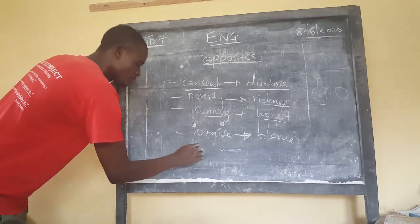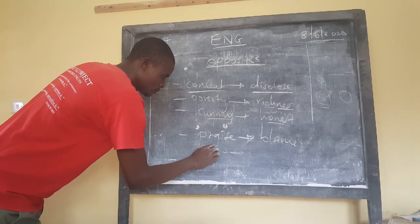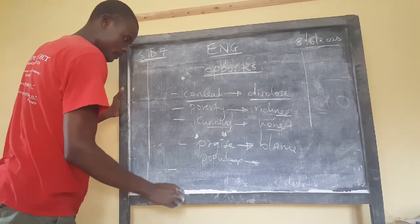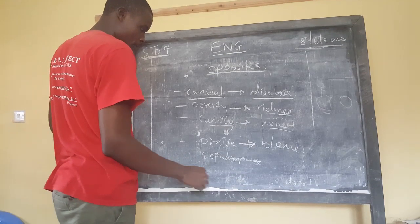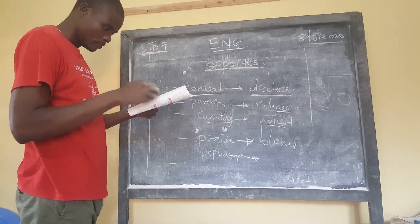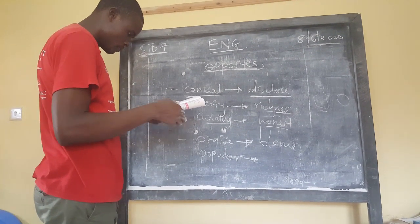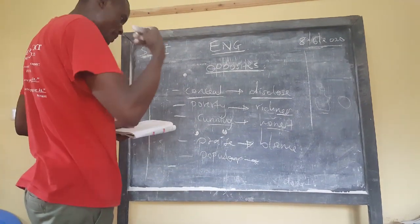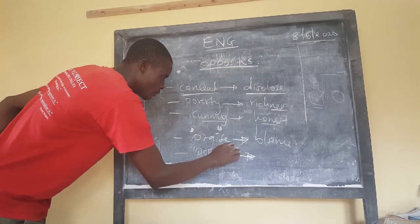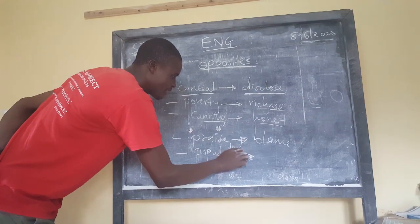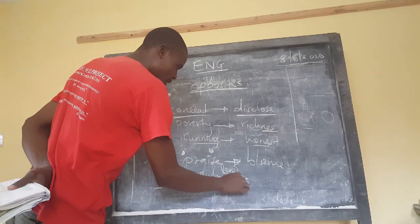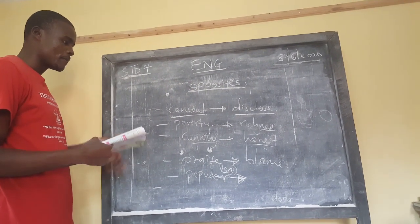I think this word is commonly misused: the word 'popular'. Someone who is popular is somebody who is loved by many — the word love comes in the word popular; popularity goes with love. People love that person a lot. So the opposite of the word popular will be 'unpopular'.